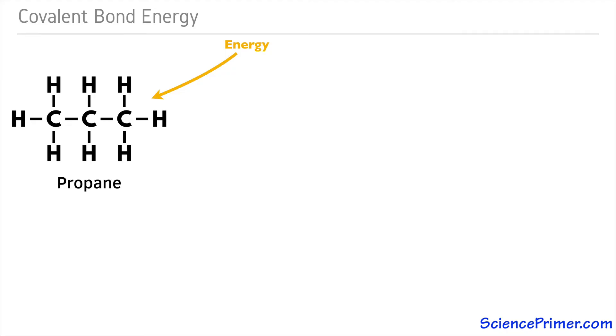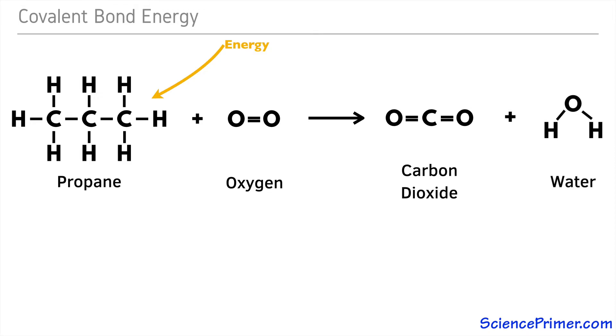Once these bonds are broken, the carbon and hydrogen atoms will react to form new bonds in order to get back to more stable arrangements. In the presence of oxygen they will form the most energetically favorable bonds possible, which in this case are the carbon-oxygen double bonds in carbon dioxide and the oxygen-hydrogen single bonds in water.